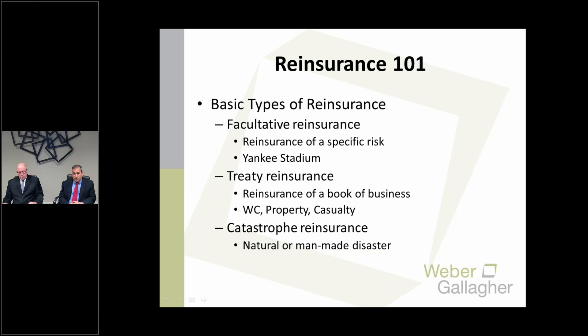Under treaty reinsurance, a workers' compensation insurer may have coverage for all workers' compensation loss and risk — it could be in a particular state or nationwide. There's a lot of leeway in negotiating these arrangements — property, casualty. Distinguished from facultative, treaty covers an entire book of business. Another category is catastrophe reinsurance, which applies to certain defined catastrophes and serves as a backstop to the really serious and severe risks that could bankrupt an insurance company.